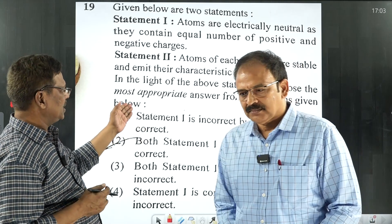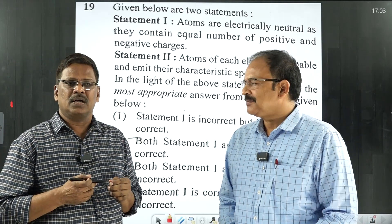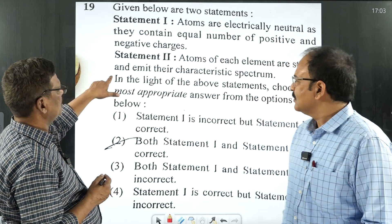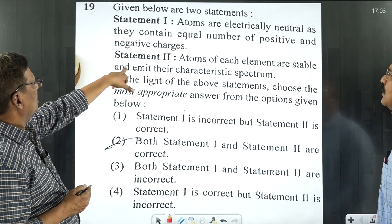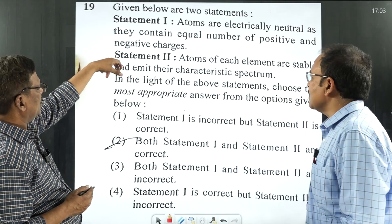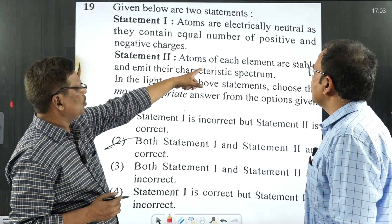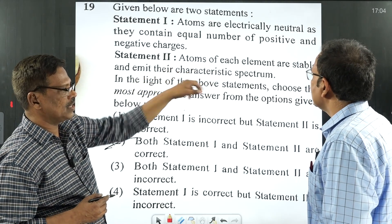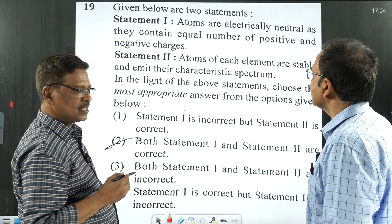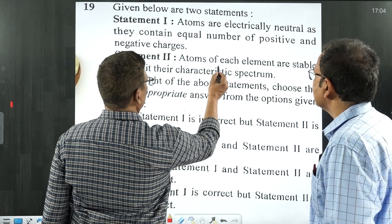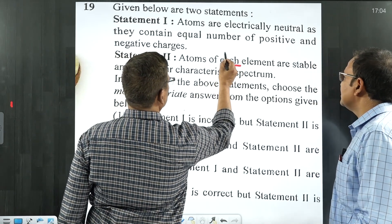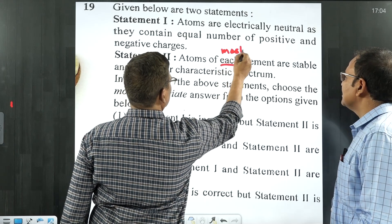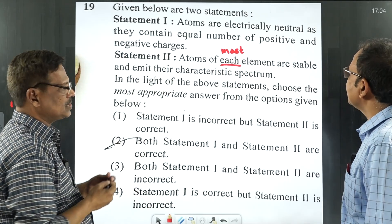You see, in the recent NEET examination some students are getting some confusion about this question. Which one sir? This one, question number 19. So in statement 2: 'atoms of each element are stable and emit their characteristic spectrum' — that was given. But some students are saying that in some books there is the word 'most' instead of 'each'. What is this confusion sir? Can you throw some light on this?